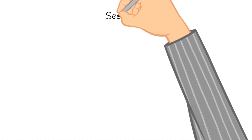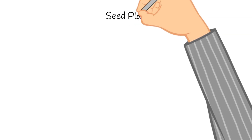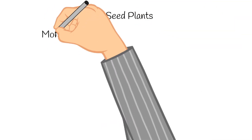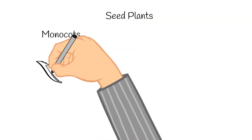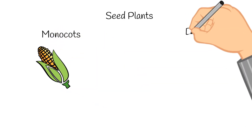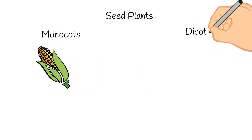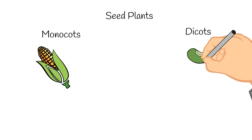Without further ado, let's start doodling. Today we are going to be talking more about plants. First, we're going to talk about some types of seed plants. Today, specifically, we're going to talk about monocots, dicots, and conifers. Monocots and dicots are the two major types of flowering plants.